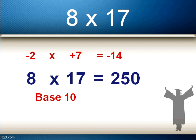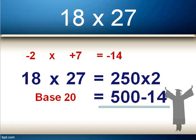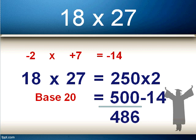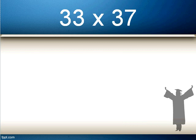We add minus 14 to the number from step one: 500 minus 14 gives us 486. So 18 times 27 is 486. You may want to pause and rewatch this part. Practice helps, and you may get to the stage where you can do it in your head.